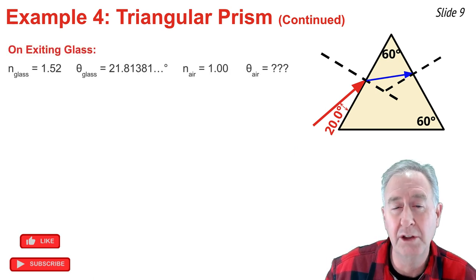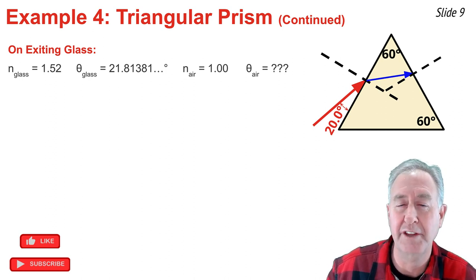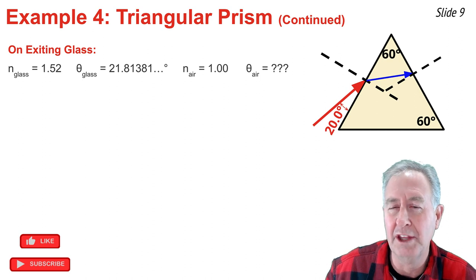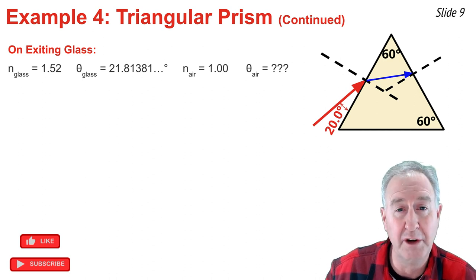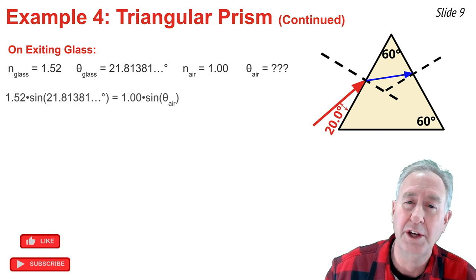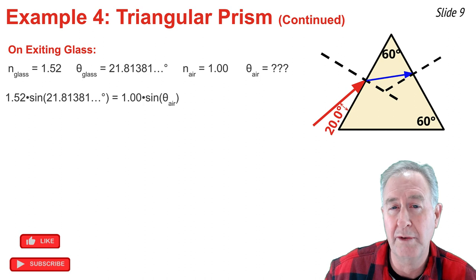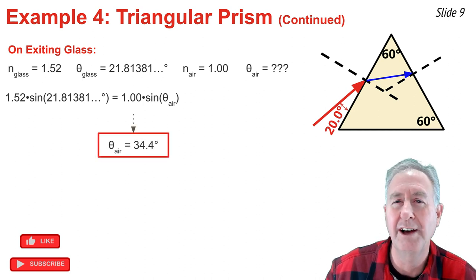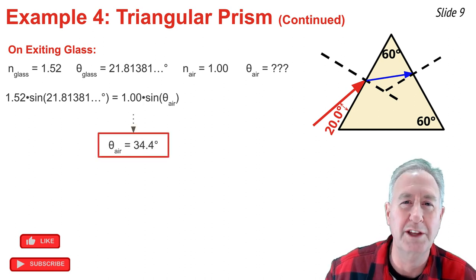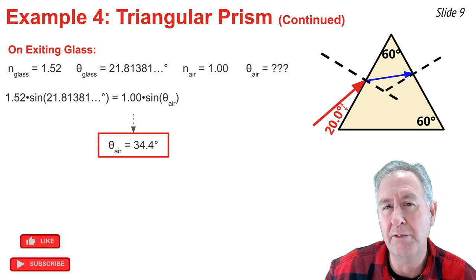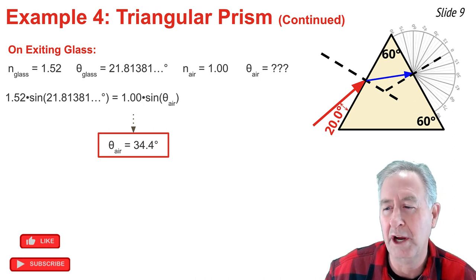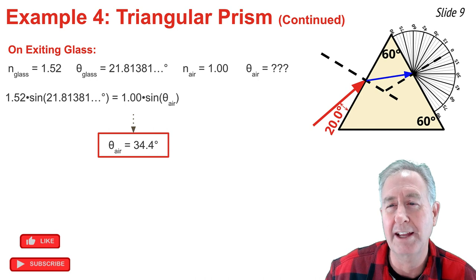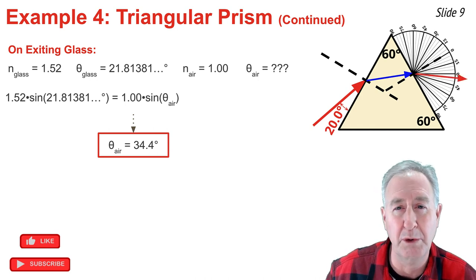Now that I know the angle of incidence in glass at the second boundary, I can complete the problem. I know the angle in glass, the index of refraction in glass, and the index of refraction in air. Using Snell's Law, substituting in known values, and doing the usual algebraic steps, I solve for the angle of refraction in air. It comes out to about 34.4 degrees, so I place a protractor down and draw an angle about 34 degrees from the normal line. The problem is finished.